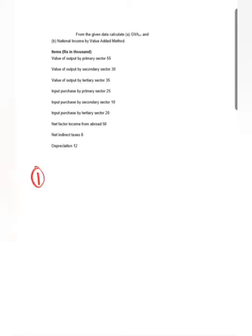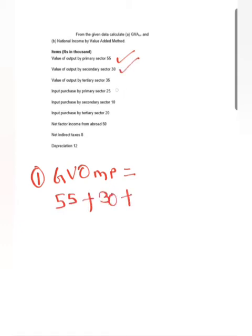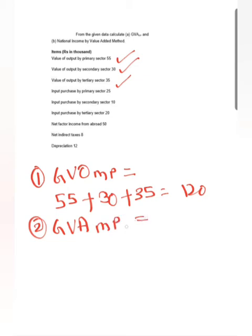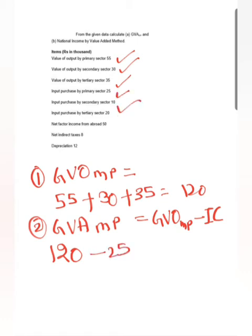In the next example, we have been given the value of output by different sectors. Step 1 is to find the total gross value of output, which equals the sum of value of output by all sectors — primary sector, secondary sector, and tertiary sector, totalling 120. Step 2 is to find GVA at MP, which equals gross value of output minus intermediate consumption. We subtract intermediate consumption of the primary, secondary, and tertiary sectors, giving GVA at MP of 65,000.